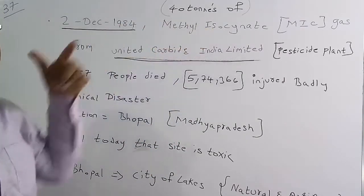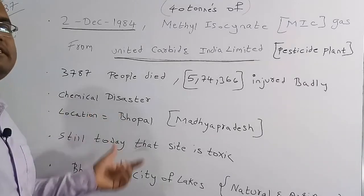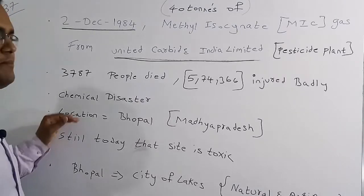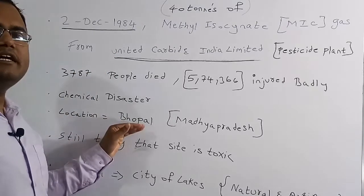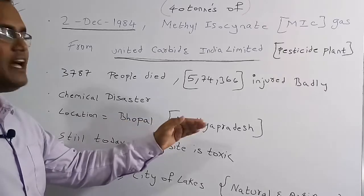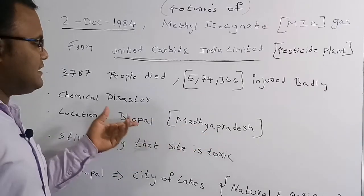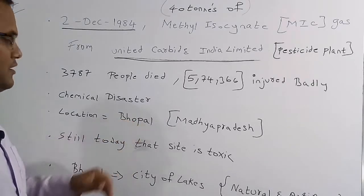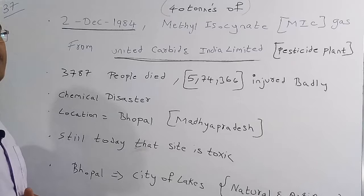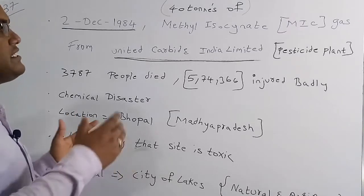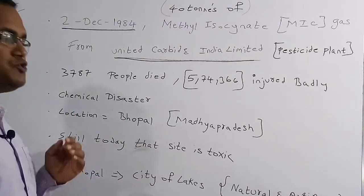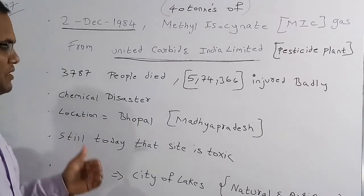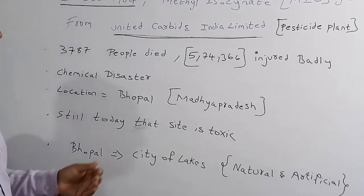Because of this chemical leakage, it is called a chemical disaster. The plant is located in Bhopal, which is in Madhya Pradesh. Still today, that site is very toxic and you cannot go there without certain precautions.